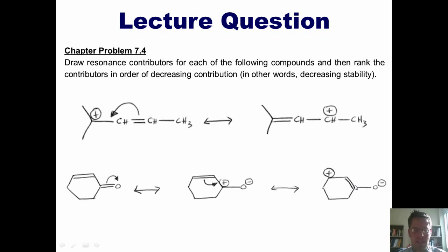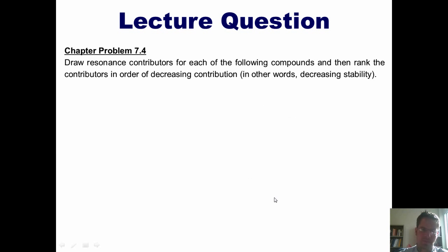In reality, the actual molecule will drift back and forth between all three of these resonance contributors, but it will spend the majority of its time looking closest to the most stable one.